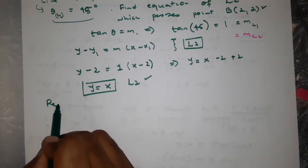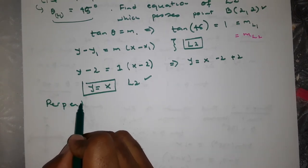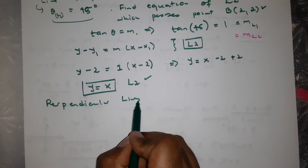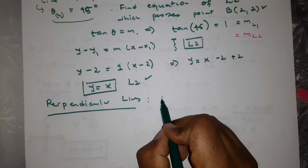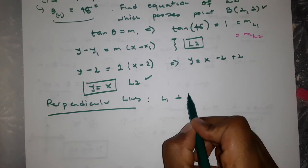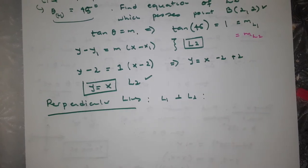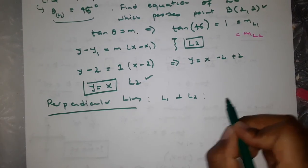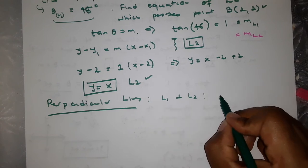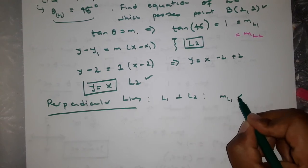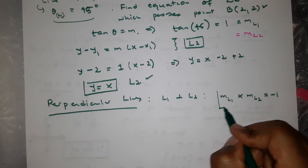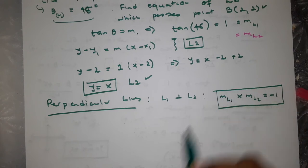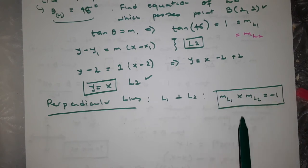Lastly, let's look at perpendicular lines. For two perpendicular lines L1 and L2, we stated in previous videos that the gradient of L1 multiplied by the gradient of L2 equals negative 1. This is very important — if you see perpendicular lines, this equation must come to mind.